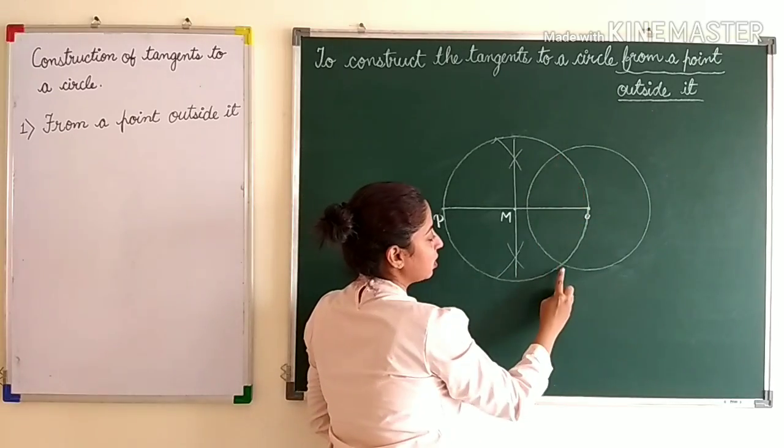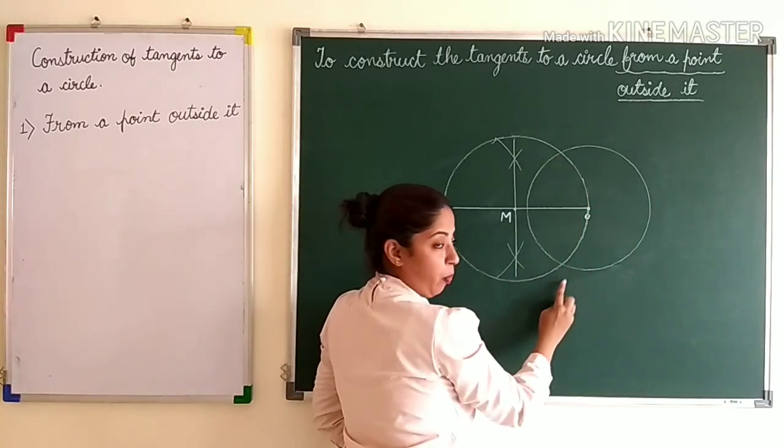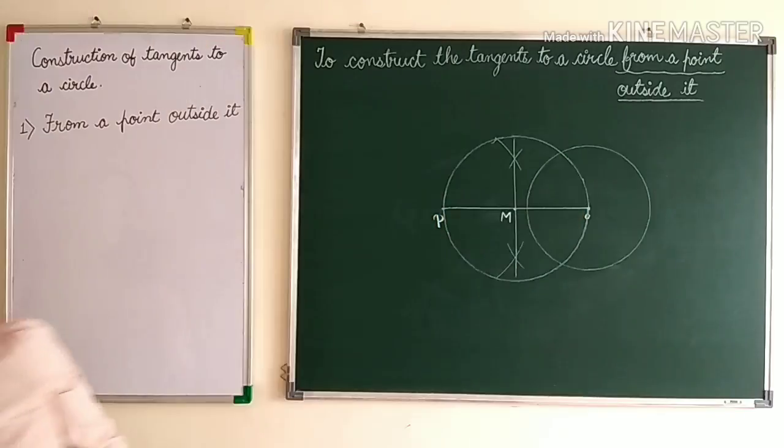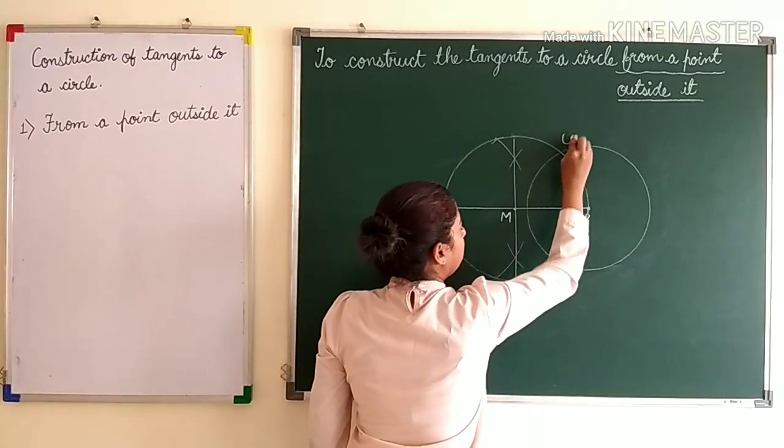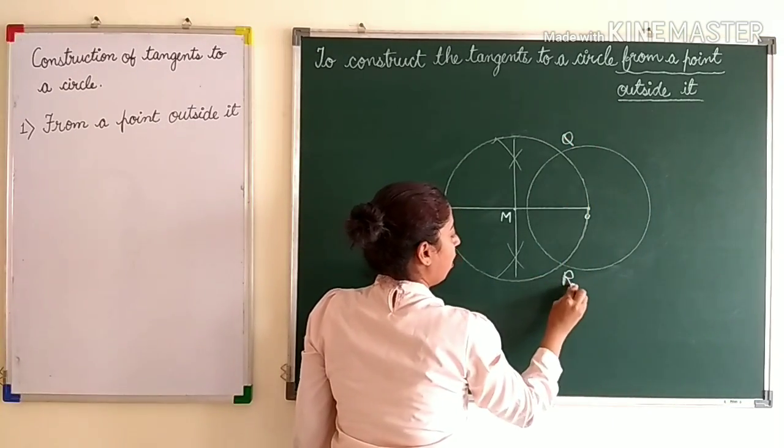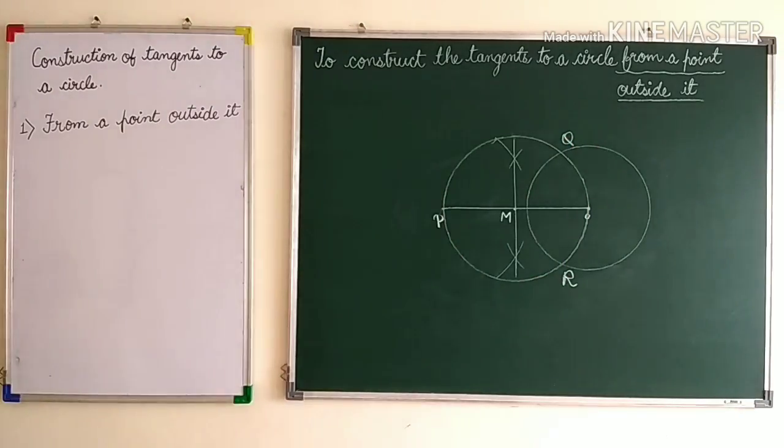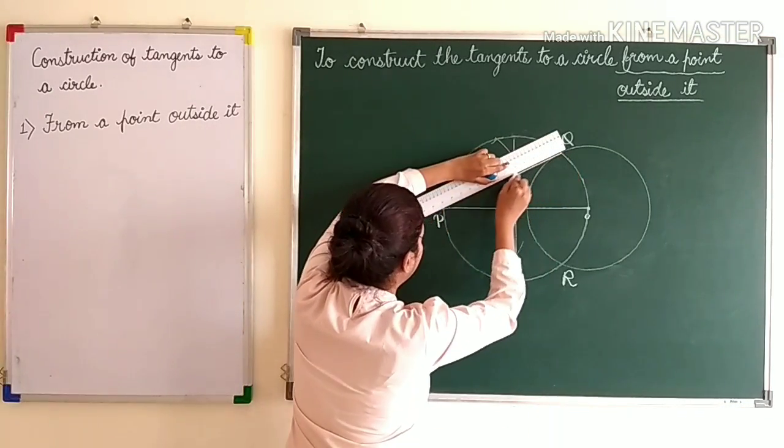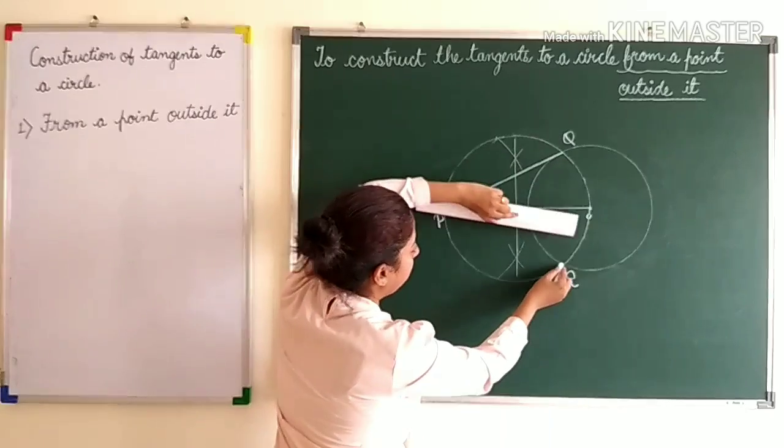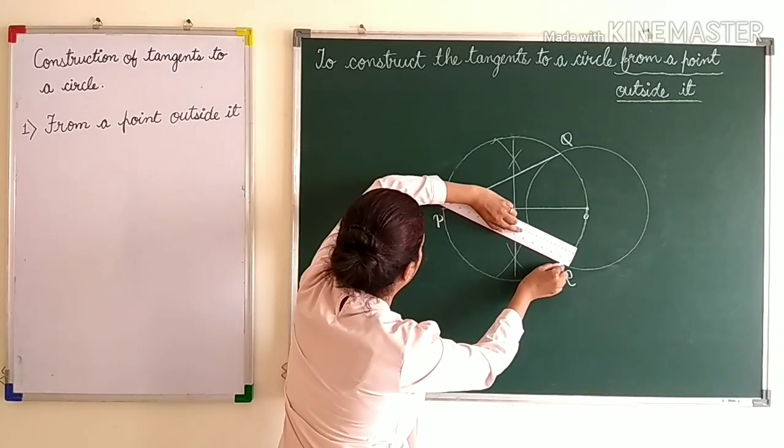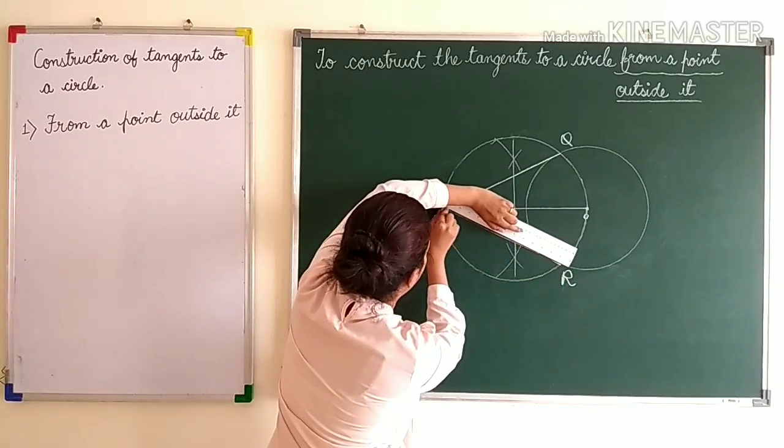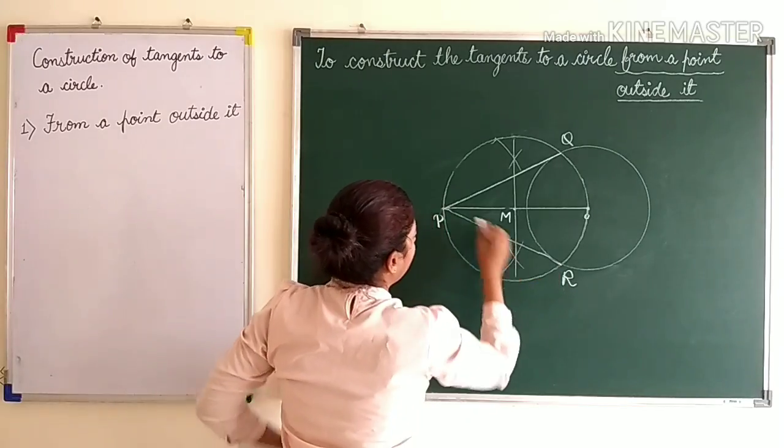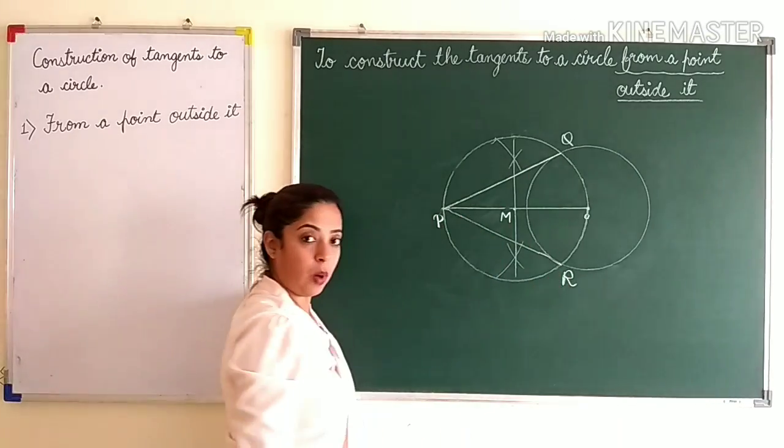Now this is cutting our previous circle at two points. We will name them as Q and R. And then we will join PQ and PR. So PQ and PR are the required tangents.